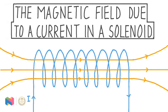In this video, our topic is the magnetic field due to a current in a solenoid. We'll see how this field is created, what it looks like, and we'll also learn how to calculate the field's strength within the solenoid.